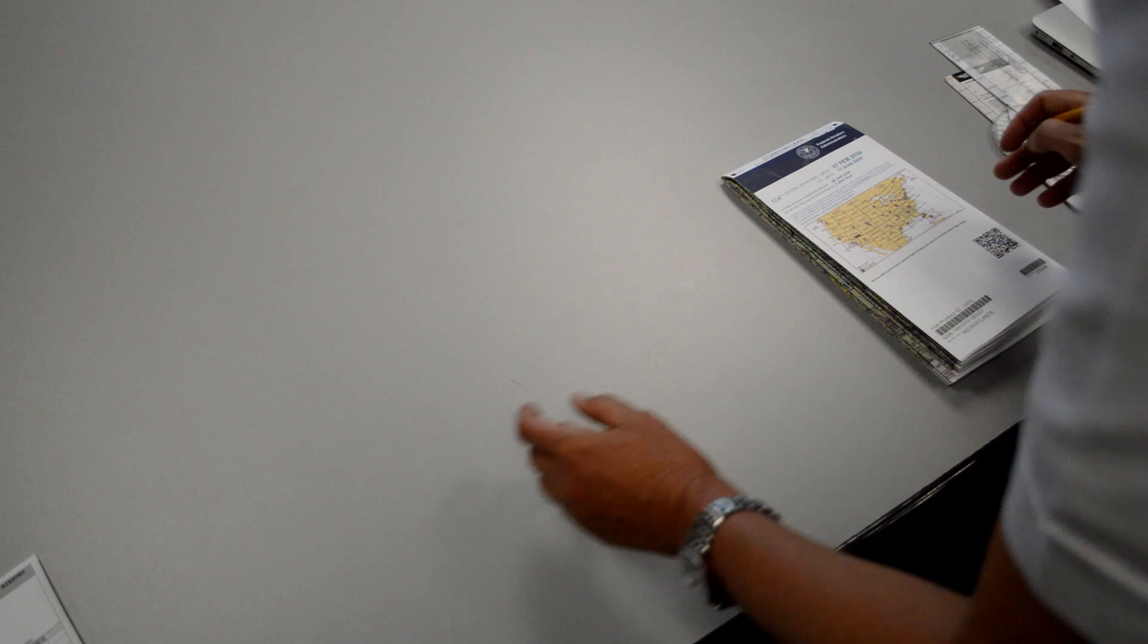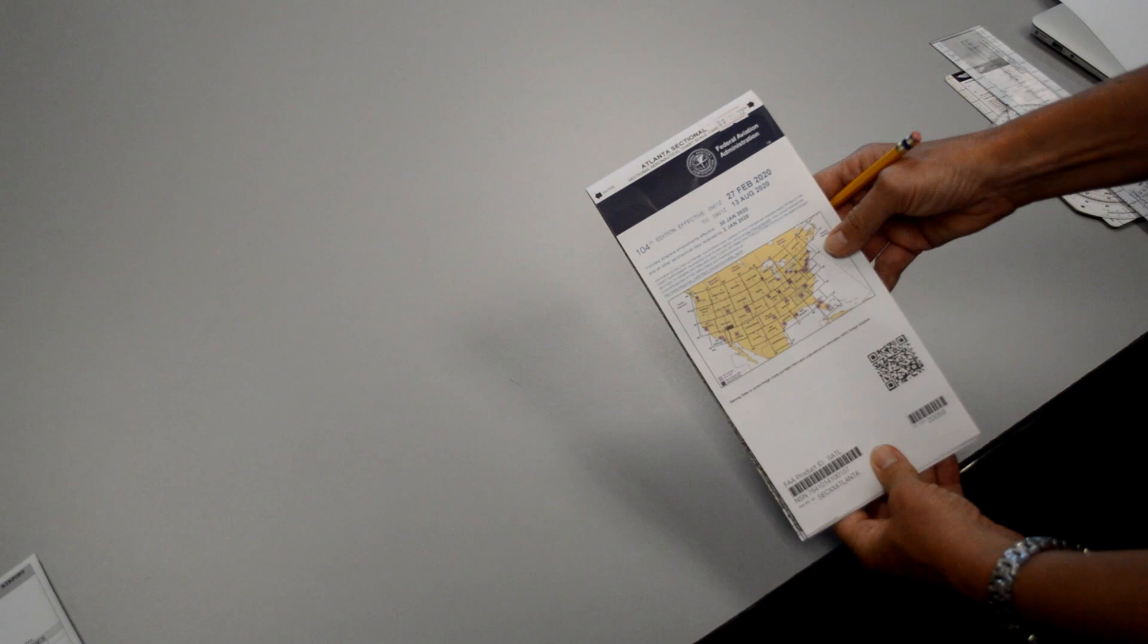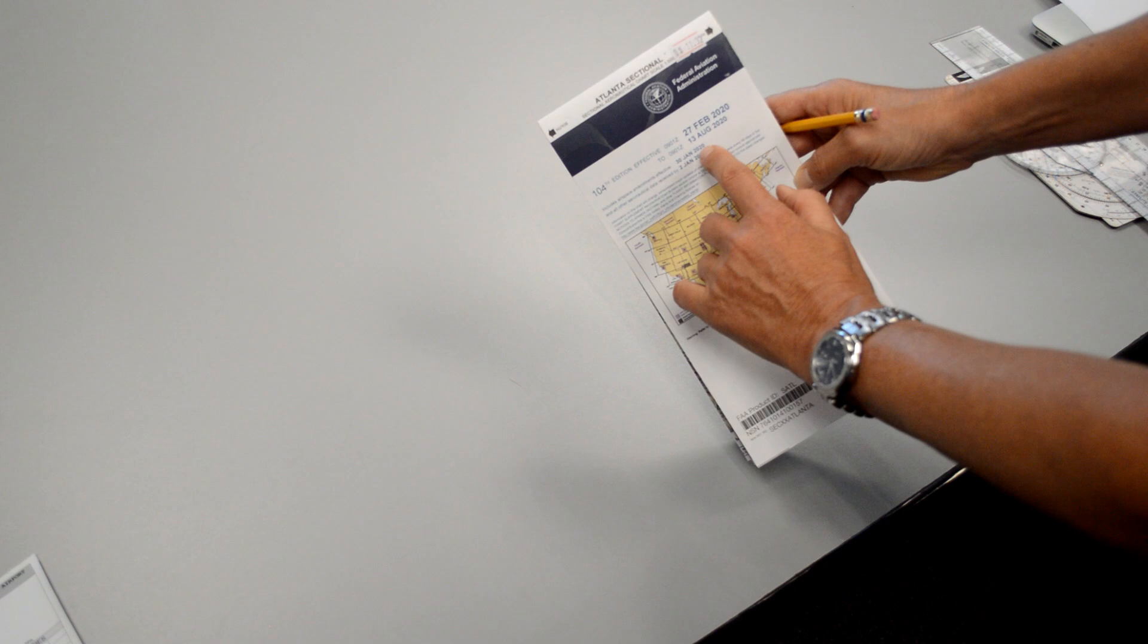So in order to draw our line on the sectional chart, we want to open it the proper way. If you remember in a prior video, we talked about having the proper sectional chart. It's current. That's very important. And this one is covering the Atlanta area.